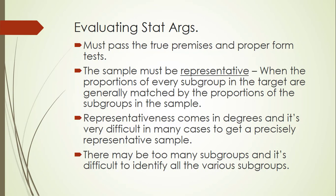Some other things to look out for is that the sample must be representative. If you have a statistical argument where the sample is not representative, then it will not pass the proper form test. Even if all the premises are true, the conclusion still does not follow because the sample was not representative. What is it for a sample to be representative? This is when the proportions of every subgroup in the target are generally matched by the proportions of the subgroup in the sample.